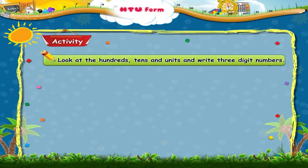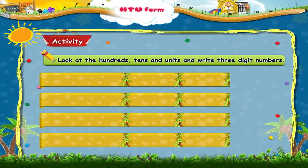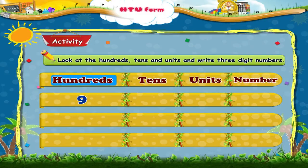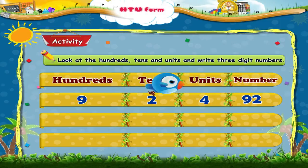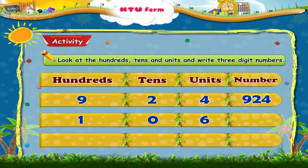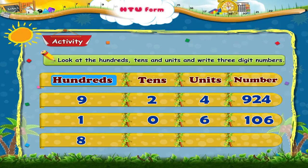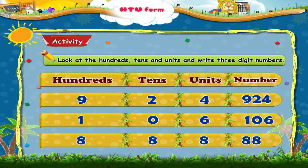Look at the hundreds, tens and units and write the three-digit number. Look at how the first one is done. There are nine hundreds, two tens and four units. So the number formed is nine, two, four. Now solve the next one. It has one hundred, zero tens and six units. So the number is written as one, zero, six. This one has eight hundreds, eight tens and eight units. So the number is written as eight, eight, eight.